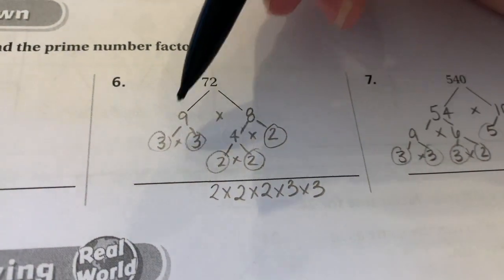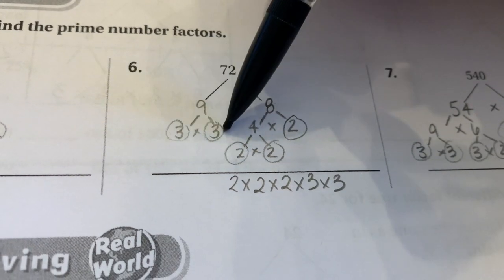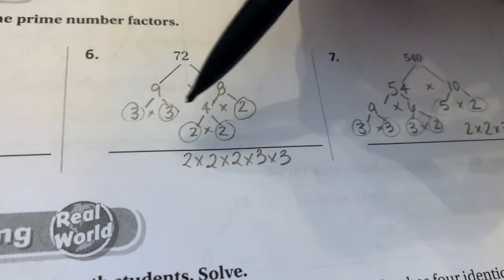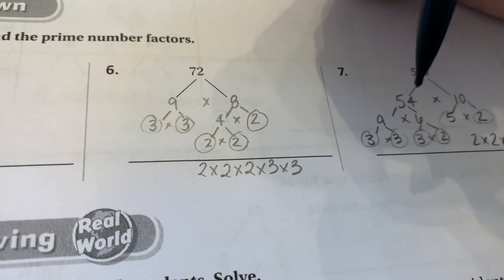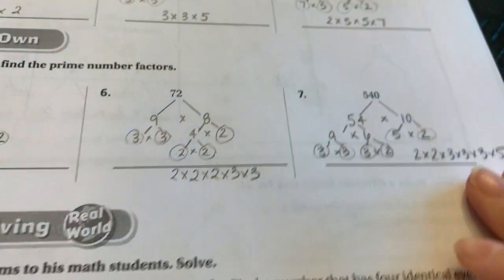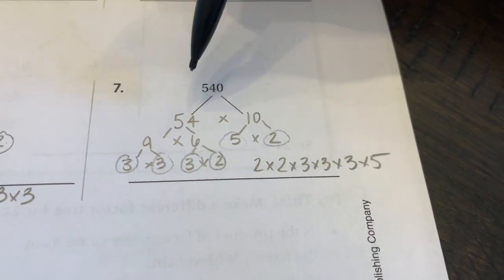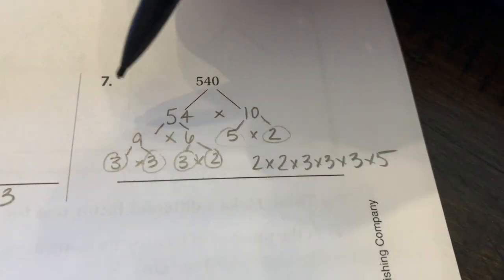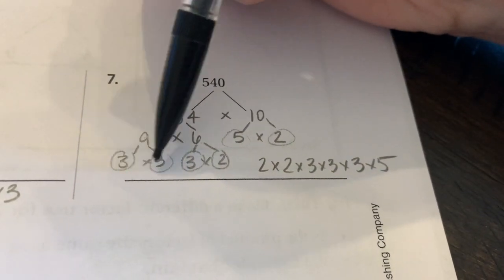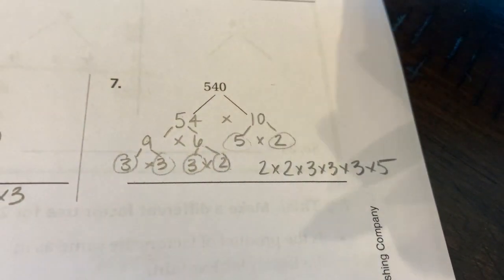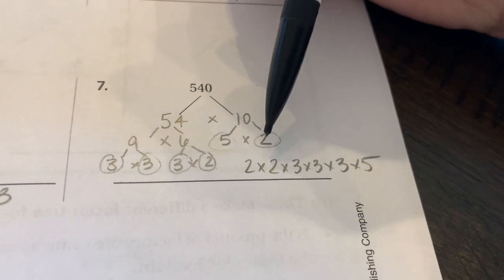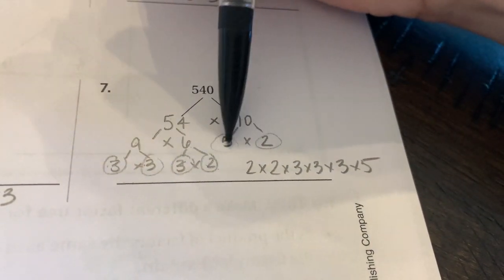72 got a little fun. I did nine times eight and broke up my nine to three times three, which was prime. Then eight: four times two — the two was prime, but I had to keep going with the four. I actually circled the four at first out of habit, so be careful — the four breaks up into two times two. So your final answer is two times two times two times three times three. And then 540 — again, if there's a big number with a zero at the end, break it up into 10 times that number. So 54 times 10, broke up 54 into nine times six, nine to three times three, six to three times two, and 10 into five times two. Final answer: two times two times three times three times three times five.